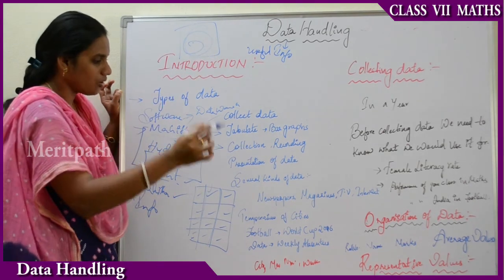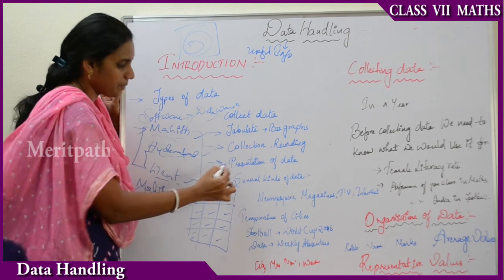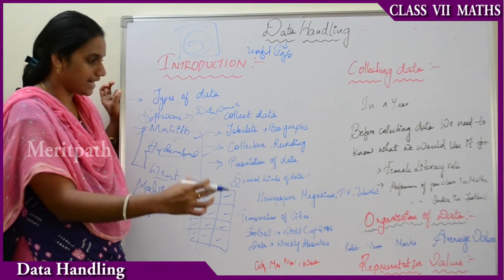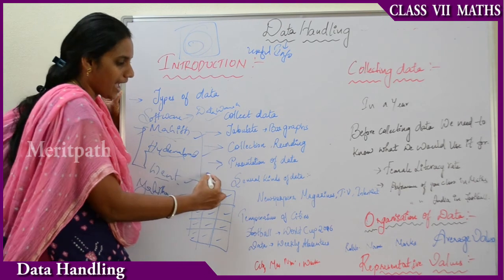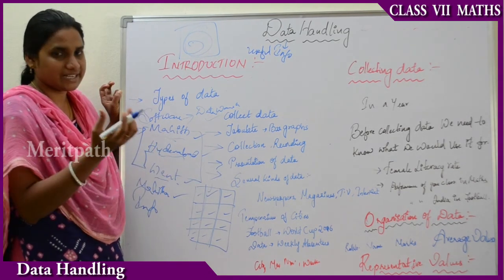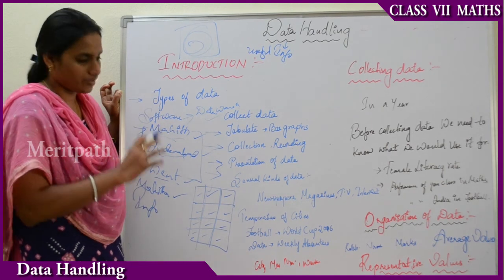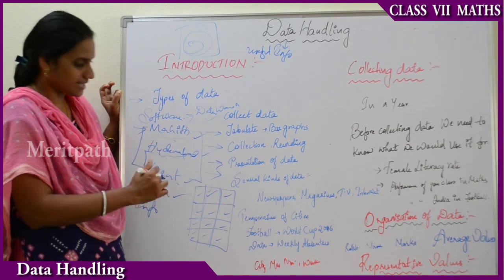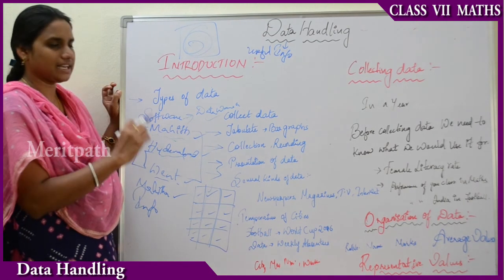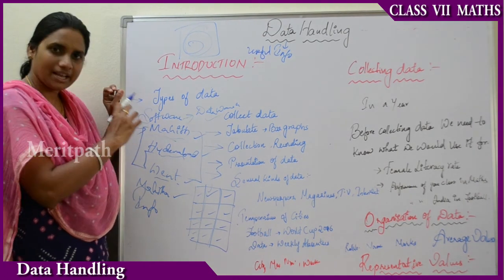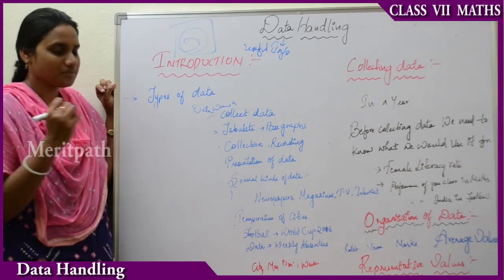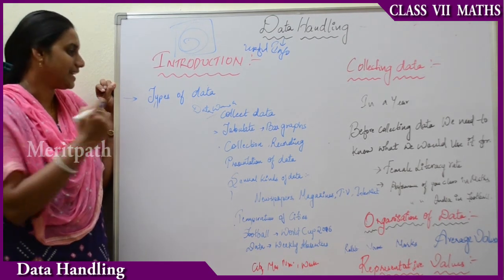Now let us see how we will be presenting the data. In this chapter we will be learning how to present the data and several kinds of data. You have already seen that newspapers and televisions are different types of data resources, as are temperatures. Now let us see some types of data and how we will be showing them in tabular form.